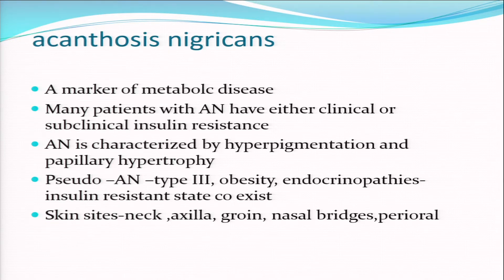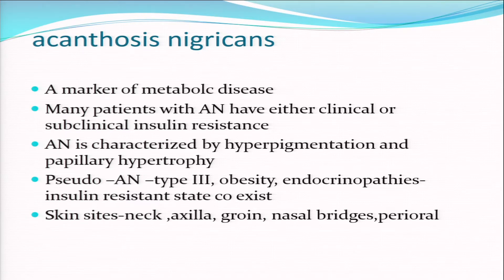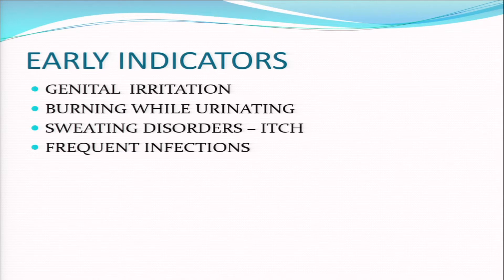Acanthosis nigricans is a marker of metabolic disease. It is now established that many patients with AN have either clinical or subclinical insulin resistance. It is characterized by hyperpigmentation and papillary hypertrophy - called type 3 or pseudo-acanthosis nigricans, seen in obesity, endocrinopathies, and insulin resistance states. Common skin sites are the neck, axilla, groin, nasal bridges, and perioral area. In an obese patient with rugose, thickened folds in the neck and axilla, you are likely looking at insulin resistance. Genital irritation, burning on urination, sweating disorders, and frequent infections are early signs warranting blood sugar estimation.